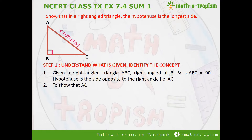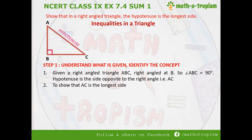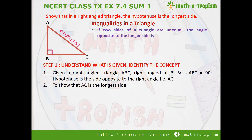We need to show that AC is the longest side — that is, out of all three sides of the triangle, AB, BC, and AC, AC is the longest side. This relates to the inequalities in a triangle. When we talk about inequalities, we mean with respect to the sides and angles — which one will be greater. We have some theorems for that. The first one is: if two sides of a triangle are unequal, the angle opposite to the longer side is the greatest of all three.